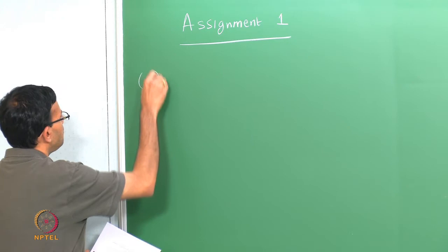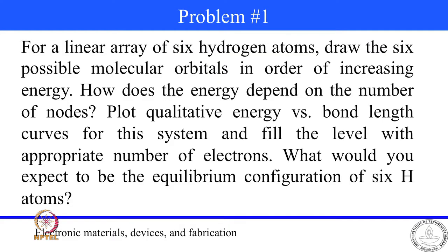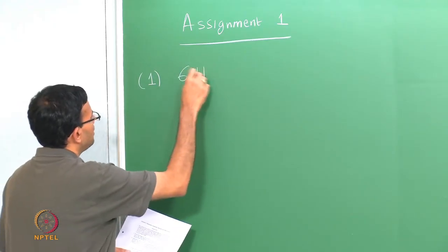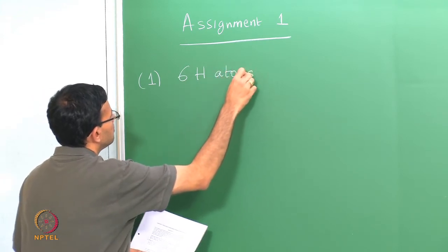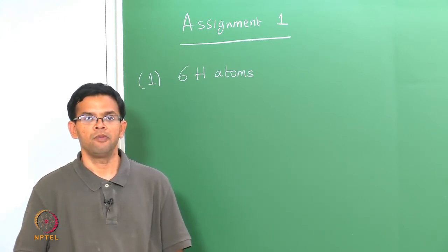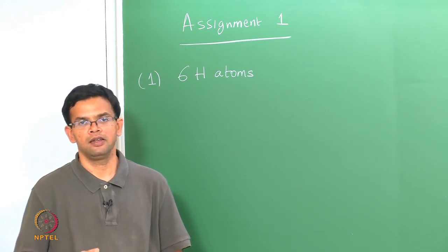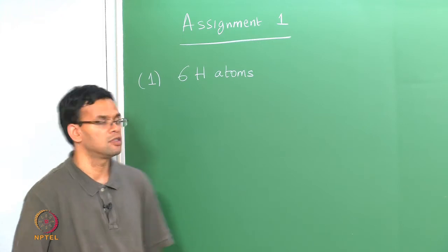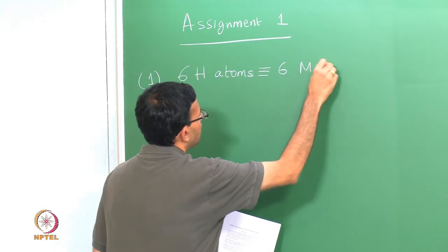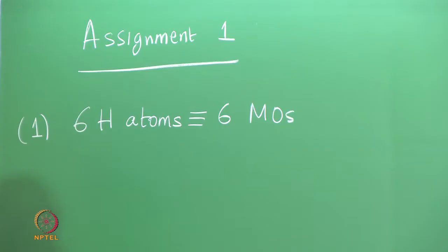Let us look at problem number 1: for a linear array of 6 hydrogen atoms, draw the 6 possible molecular orbitals in order of increasing energy. We have 6 hydrogen atoms, and we know that when n atoms come together they form n orbitals which can accommodate 2n electrons. So we have 6 hydrogen atoms forming 6 molecular orbitals.